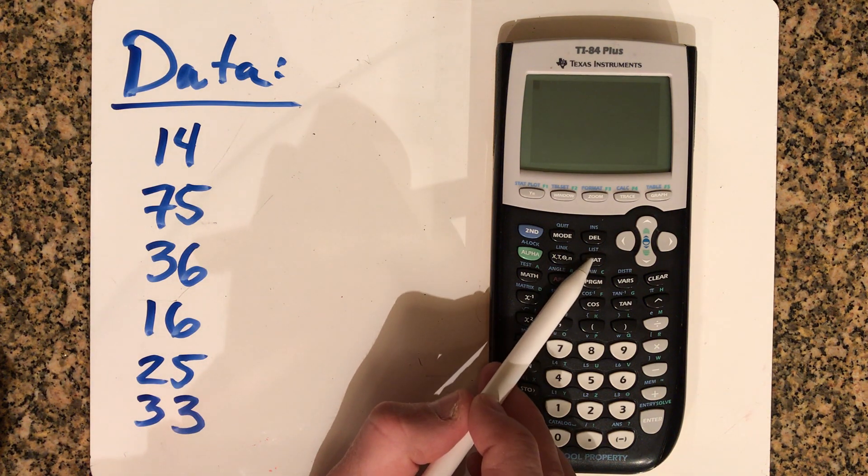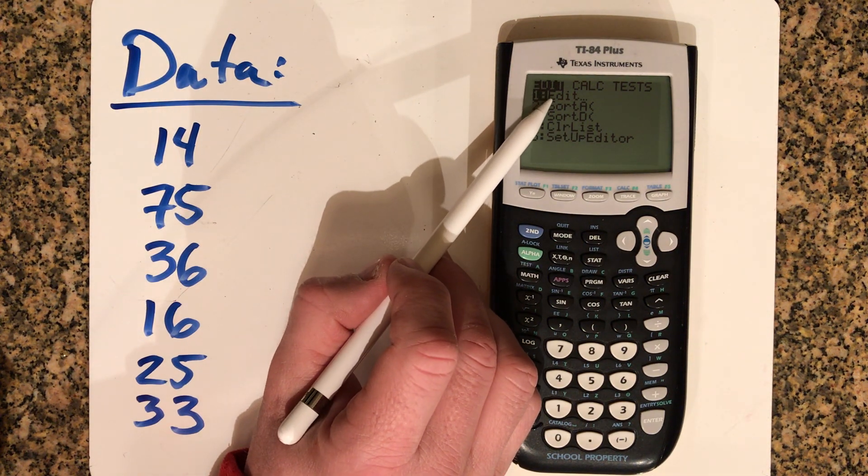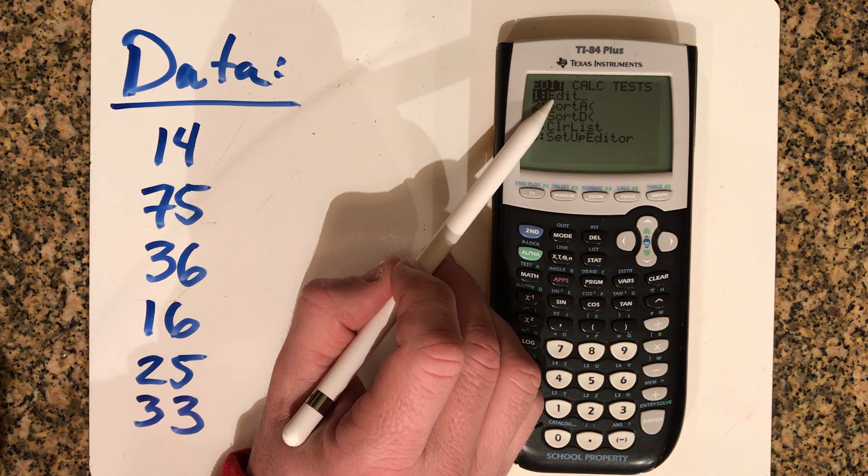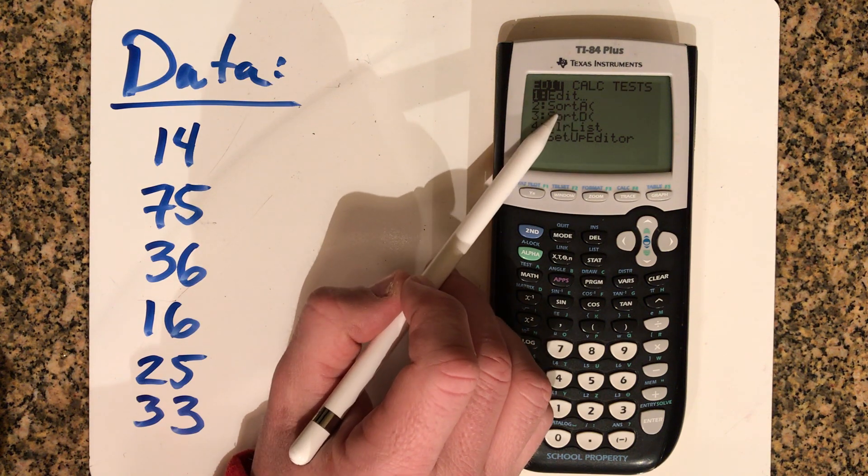So the first thing I want you to do is press the stat key. You'll notice there's some things in this menu that you want to pay attention to. There's the edit option right here. That's where you're going to put your data into the calculator. This little sort A, which means sort the data in ascending order.